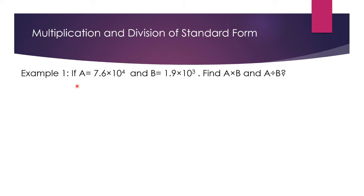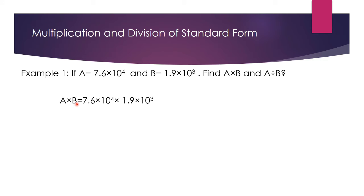For example, a is equal to 7.6 multiplied by 10 to the power 4, and b is equal to 1.9 multiplied by 10 to the power 3. You are asked to find a multiplied by b, and a divided by b. First of all, we will solve for a multiplied by b. a multiplied by b will be equal to 7.6 multiplied by 10 to the power 4.